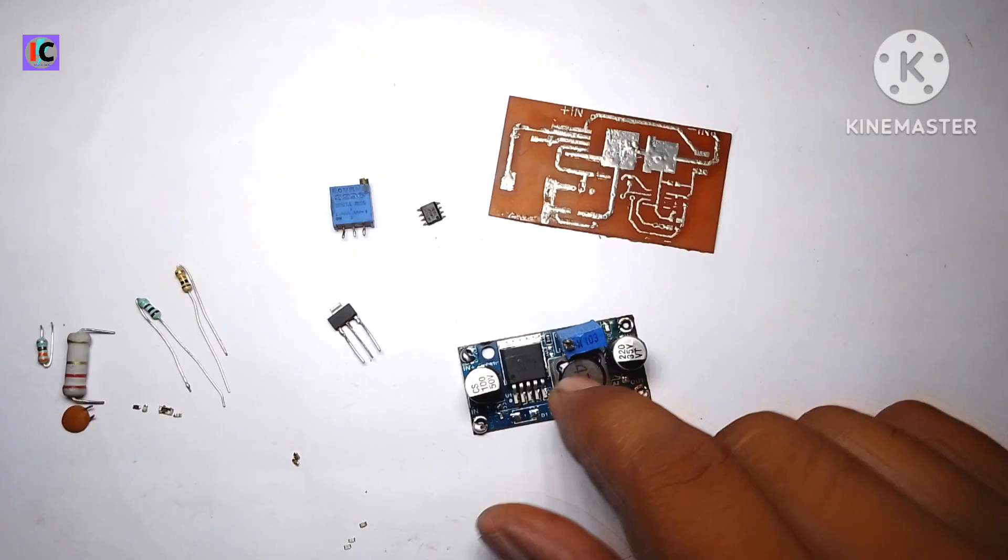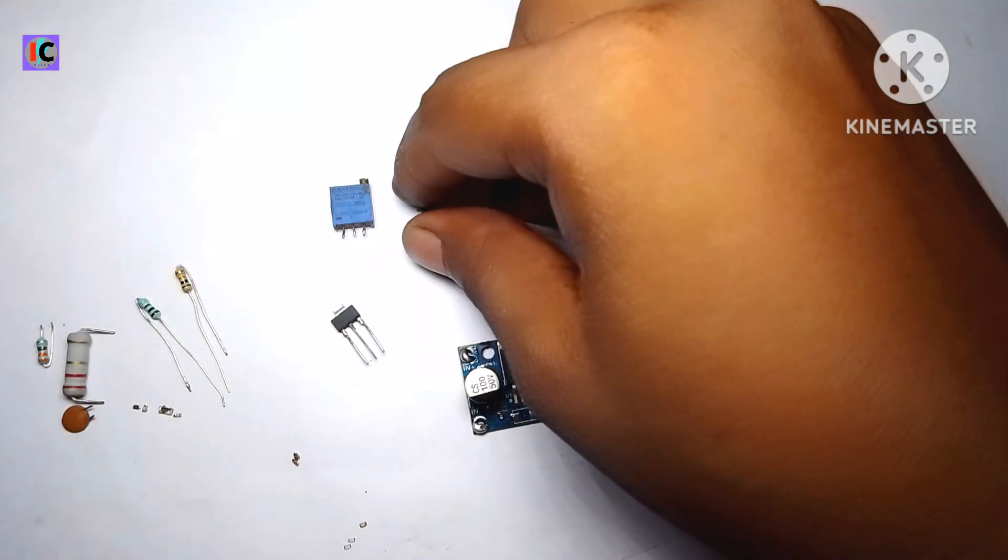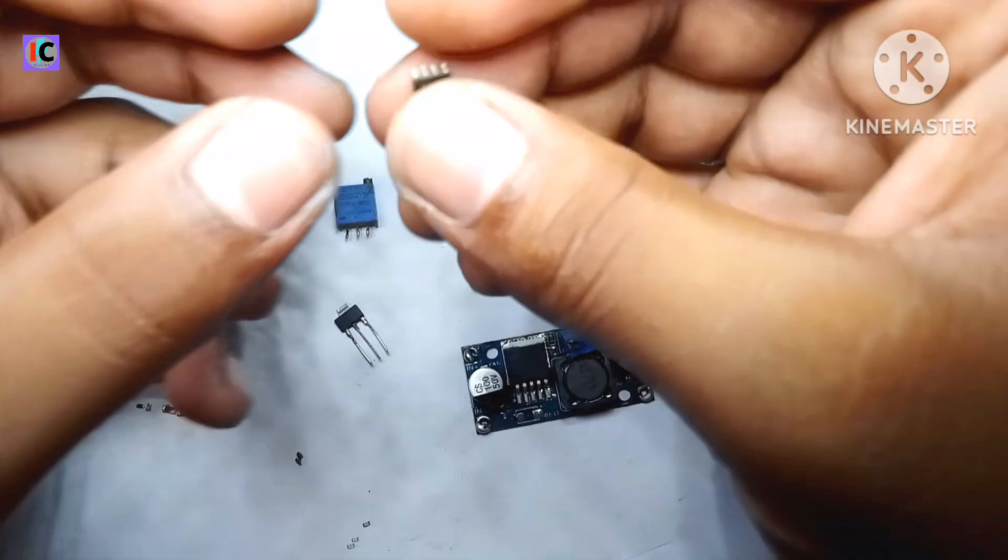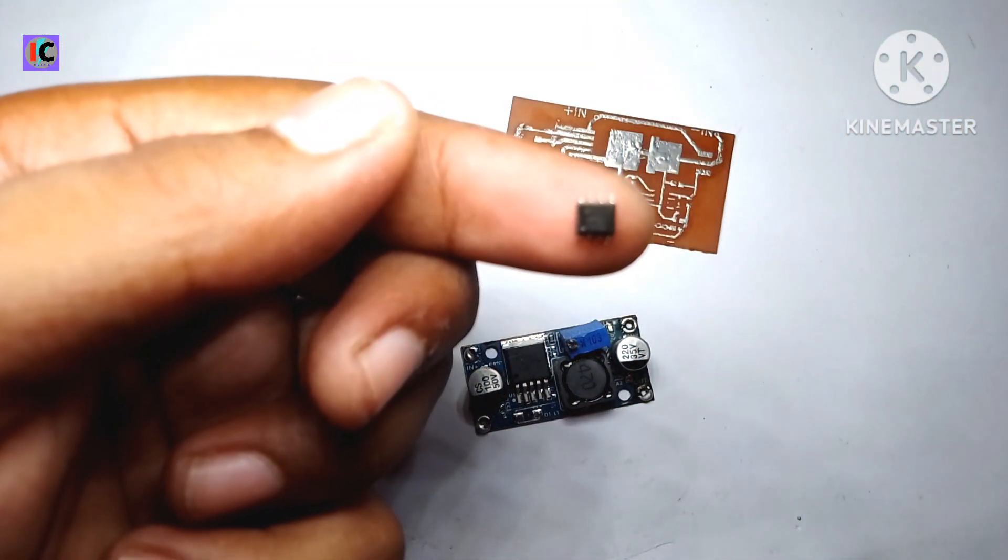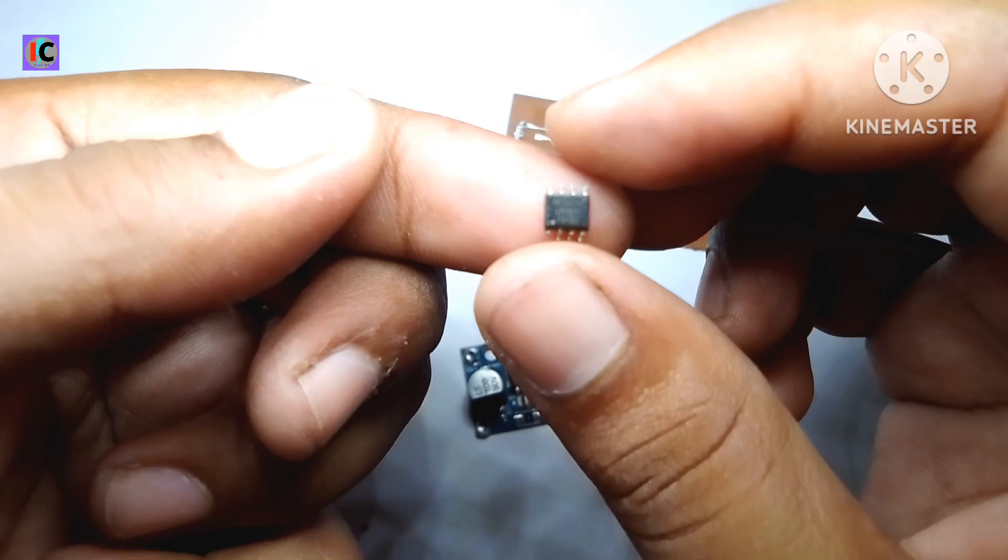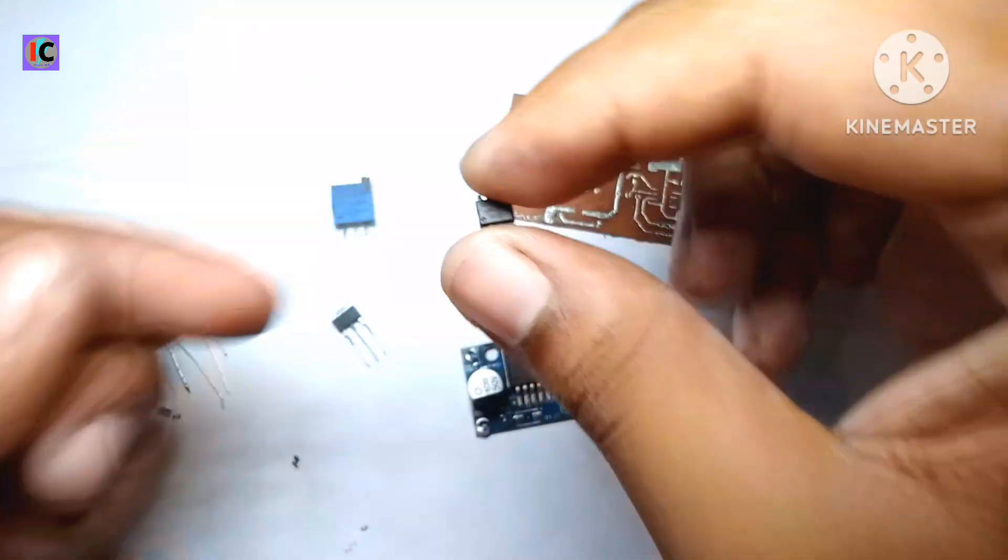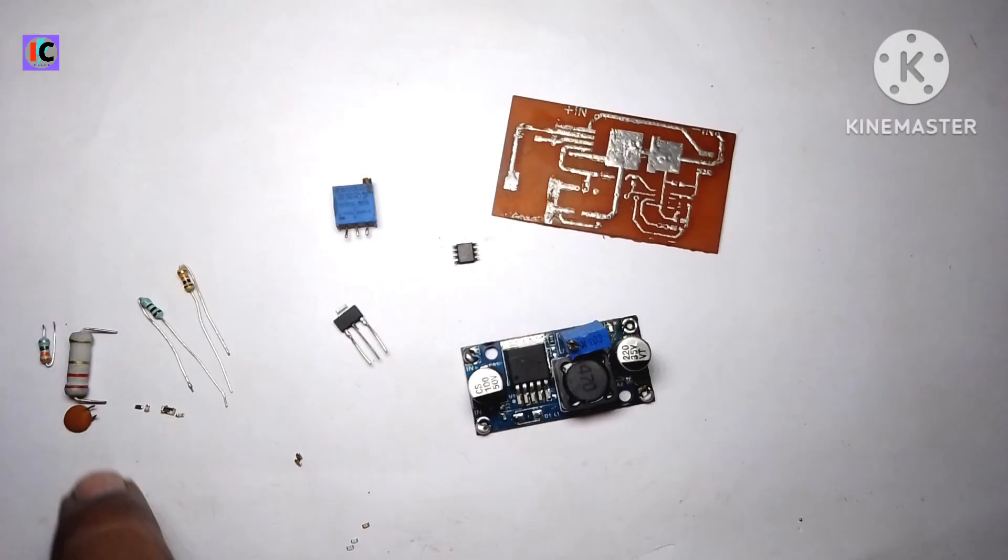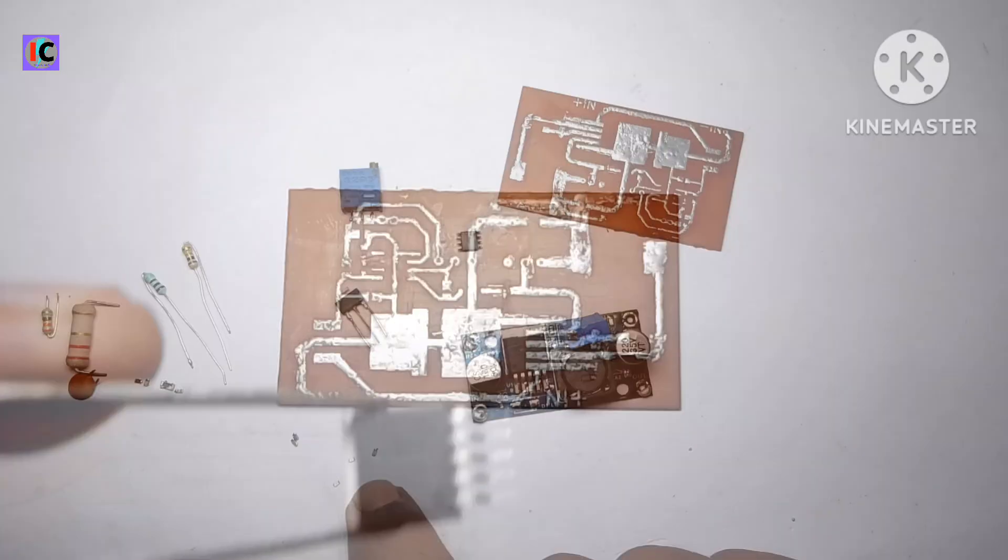I will use the components from the LM2596 buck converter module. Here are the main components, which is the SMT version of the LM358 IC. This will be used in combination with a low-value resistor. When current passes through the low-value resistor, the voltage will drop.